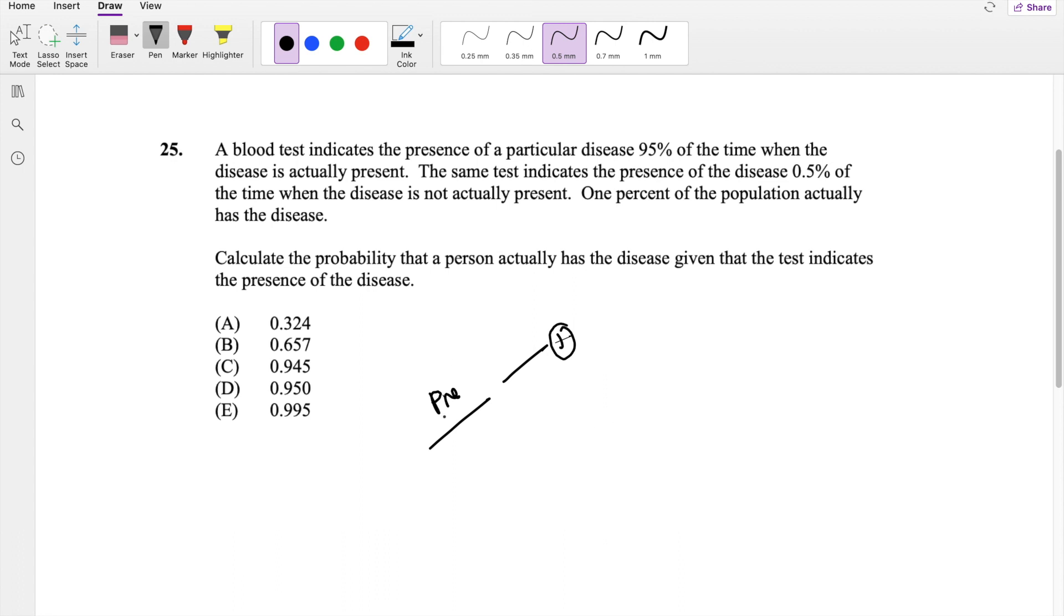So you actually, when it's present, it tests positive with a probability of 0.95. So that means it tests negative with a probability of 0.05.